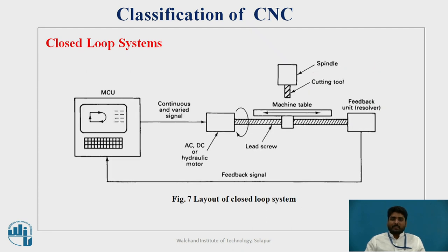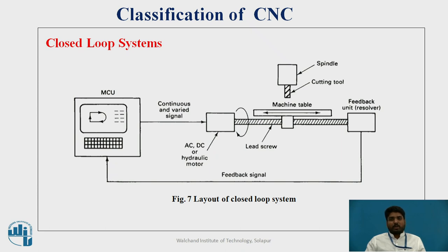This can be clearly understood with the layout of the closed loop system. The MCU is similar to the open loop setup, but the feedback system returns information from the machine tool back to the MCU. In the figure, signals are sent to the hydraulic motor or any type of motor. From there, power is supplied to the machine tool, and the cutting tool and spindle perform operations. The position and velocity of the tool are captured as feedback and sent back to the MCU — this is the closed loop system.